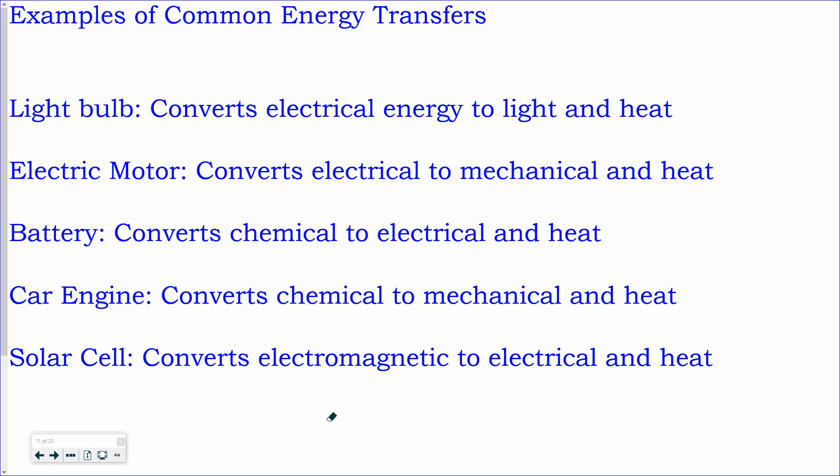Here's some examples of common energy transfers. Light bulb converts electrical energy to light and heat. Electric motor converts electrical energy to mechanical energy and heat. Battery. Notice what all of these have in common. All of these, you will have some of the energy lost to the surroundings in the form of heat. And that's crucial when we're talking about energy efficiency. So take a note on some of these because you're going to be doing a worksheet here in the next couple of days that's going to ask you to identify some of these energy transfers.